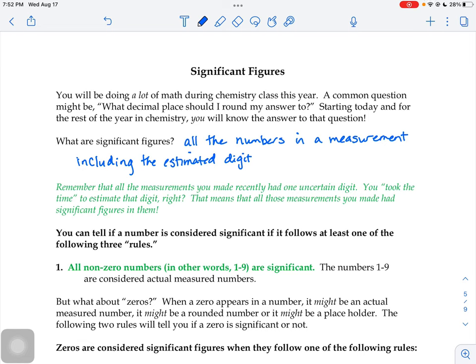So it says there in green: remember all the measurements that you made recently had one uncertain digit, and you took the time to estimate that digit. That means all those measurements you made had significant figures in them, you just didn't realize it at the time.